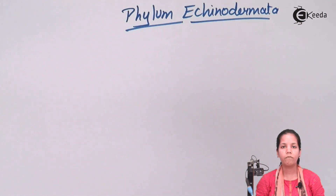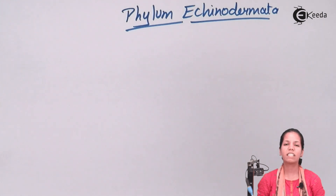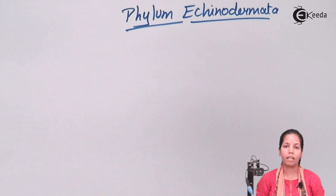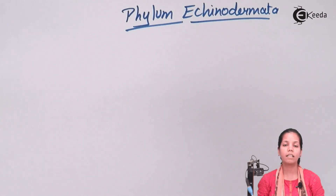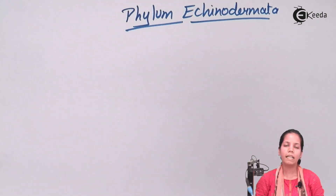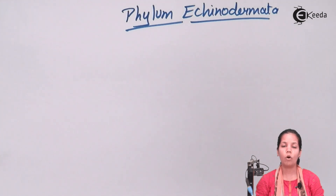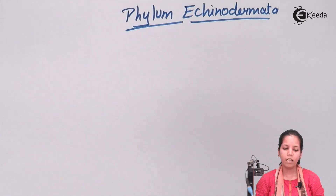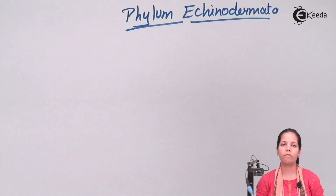Phylum Echinodermata basically have organisms that have an outer endoskeleton, and this endoskeleton gives them protection because these organisms don't have any other fins or claws as in other sea animals or fishes. These marine animals have radial symmetry. In the case of starfish, if you draw an angle from the center you can observe radial symmetry. There is also a water vascular system present in this organism, which helps the starfish when it needs to engulf food.